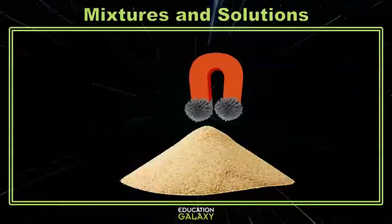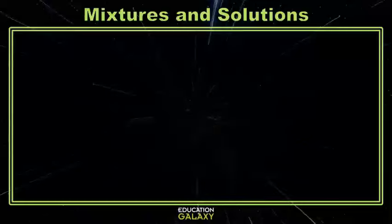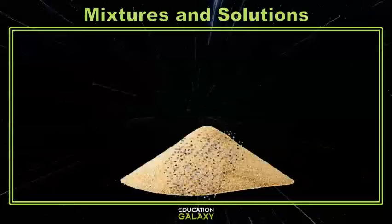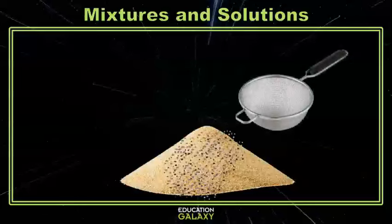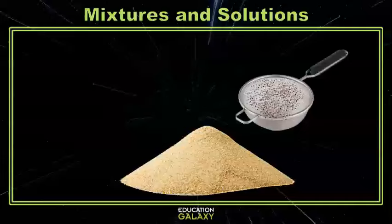If you had different sized items in your mixture, you could also use a filter or a strainer. Let's say you mix sand and gravel together. You could separate your mixture back out by pouring it through a strainer. All of the sand would fall through, leaving behind just the gravel.